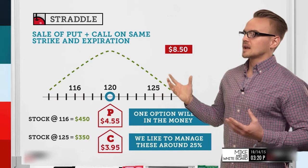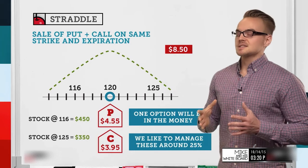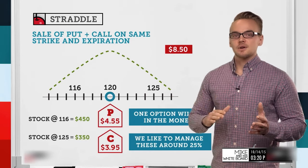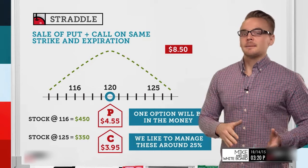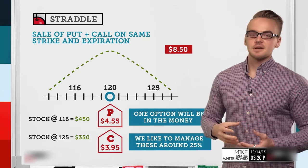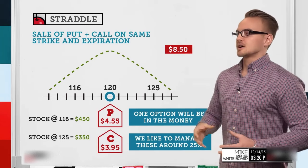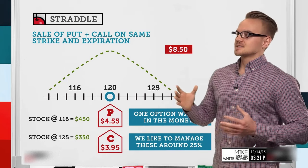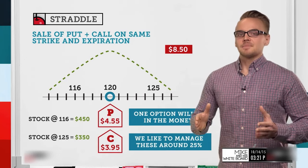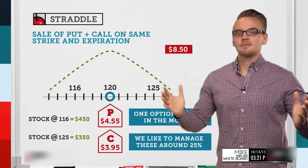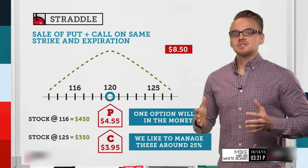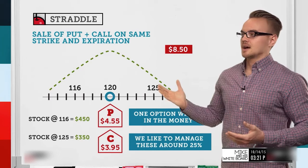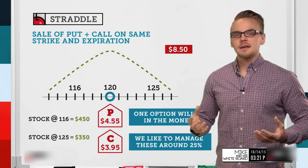Two important things to note about straddles: first, one option will always be in the money. Unless the stock price is at exactly 120.00, it's going to be in the money either way — if it's below the strike, the put is in the money; if it's above, the call is in the money. Second, we like to manage these around 25%. Since this is a neutral, undefined-risk strategy and we're trying to pin a strike, if we can capture 25-30% of the credit received fairly quickly, we'll be happy to close the trade.